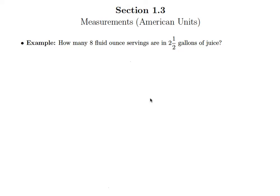In this problem we want to know how many eight fluid ounce servings are in two and a half gallons of juice. Whenever you purchase a food or drink they're going to tell you how much constitutes a single serving and then all the nutritional facts are based off of that. This particular juice says that eight fluid ounces is one serving and we want to know if I've got two and a half gallons of this juice, how many servings do I really have?